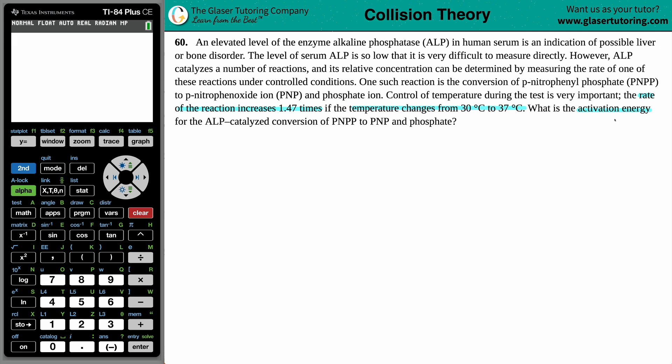Now just know that activation energy is always an Ea value. And if you're trying to solve for an Ea value in activation energy and they give you two temperatures, chances are you're going to be using one formula.